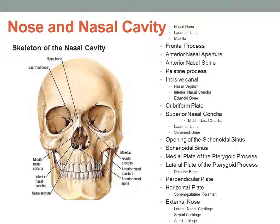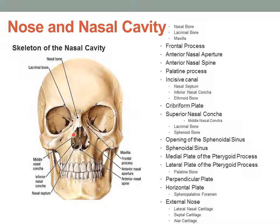If we look at the skeleton of the nasal cavity, I've copied in some of the terms from the dissector — these also include terms of the cranium and viscerocranium. This is a picture directly from the dissector, page 241. Here would be your nasal bone in the midline, your lacrimal bone — really small here. Then you can see from anteriorly the conchae: your middle nasal concha and the inferior nasal concha. Right in the middle is the bony part of your nasal septum, and then you have the maxilla and the frontal process, the anterior nasal aperture, and the anterior nasal spine.